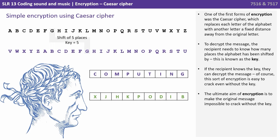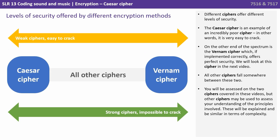Of course this sort of encryption is easy to crack even without the key. The ultimate aim of encryption is always to make the original message impossible to crack without the key. Different ciphers offer different levels of security. The Caesar cipher is an example of an incredibly poor cipher — in other words, it's very easy to crack.